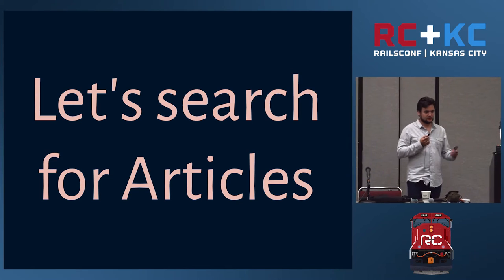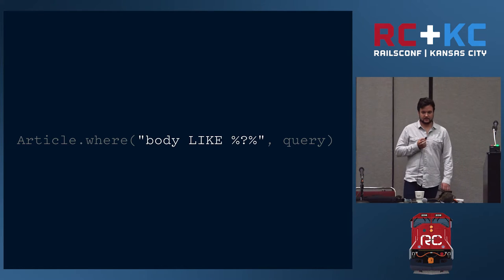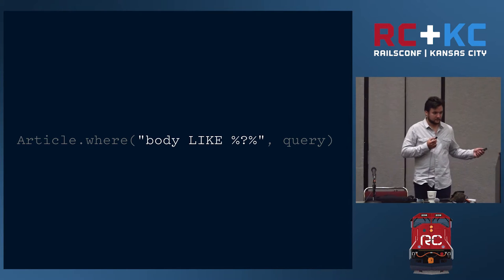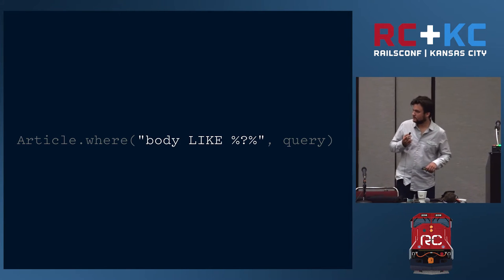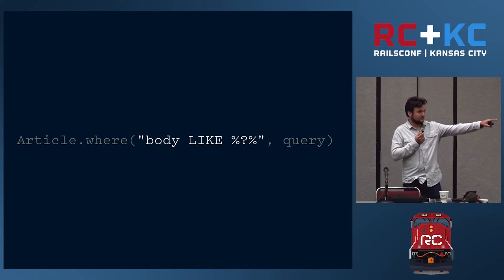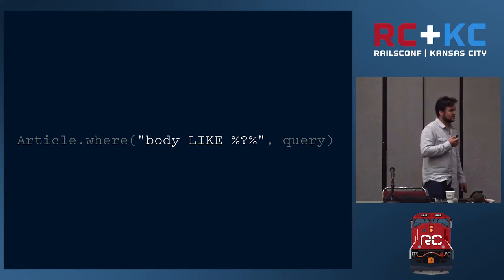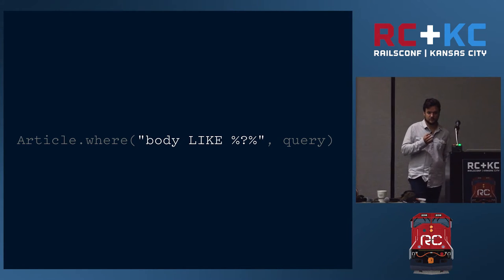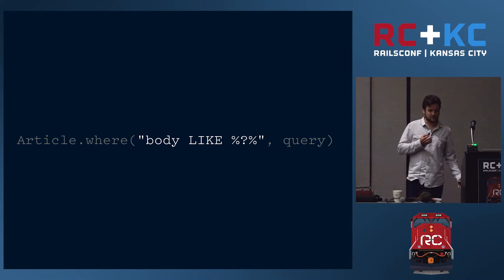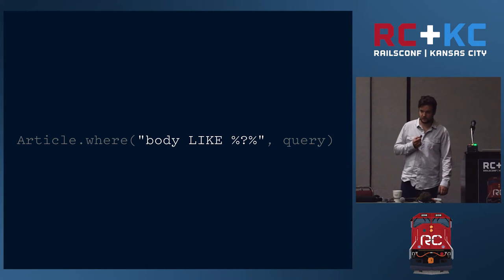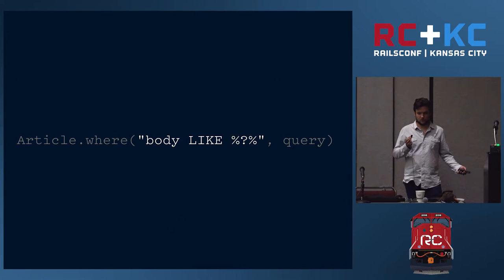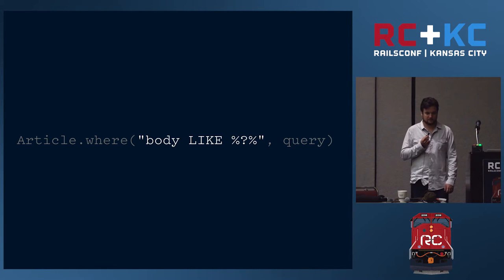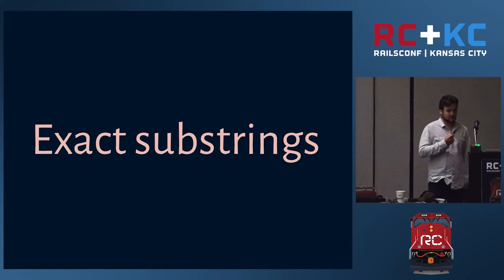Let's look at the classic example: let's search for articles in our application. The simplest thing we could possibly do that works is to search for substrings. We've got articles where the body includes some substring — pass in that query. You've probably seen this in your applications. This works if your users know exactly what they're searching for. If they want to find an article with the word 'book' in it and they know it's going to be lowercase in the middle of a sentence, then they can search like this. That's doing exact substrings — not the most useful thing.